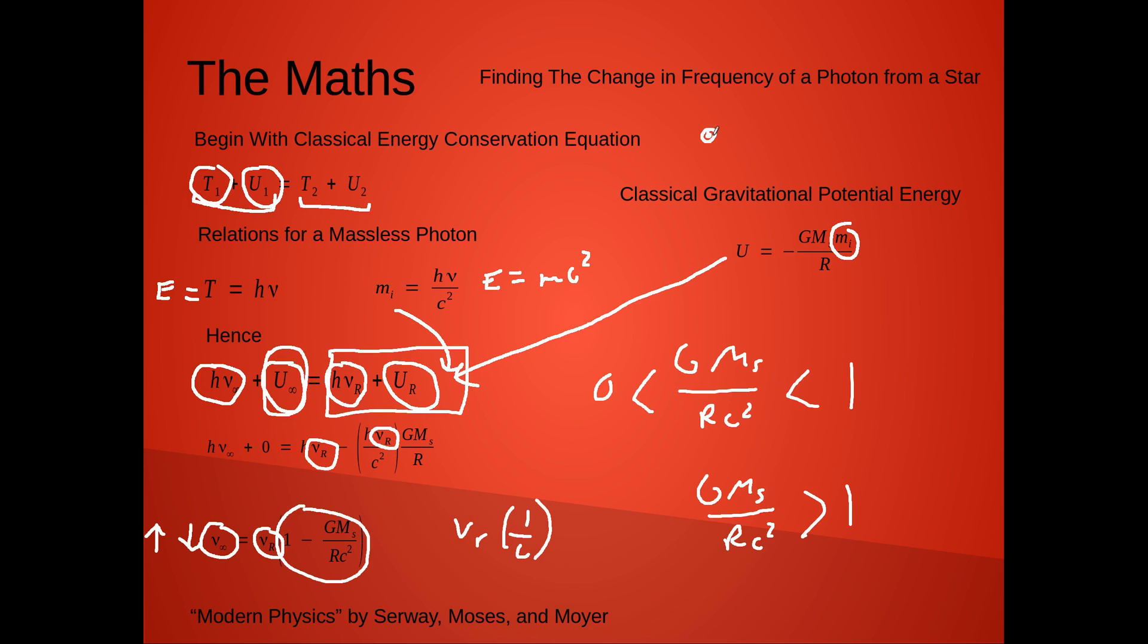So, if this term holds true, you're actually dealing with a black hole, and if this term holds true, you're dealing with a star, where if this term is closer to 0, you're going to have a higher redshift, and if it's closer to 1, you'll be having a lower redshift.